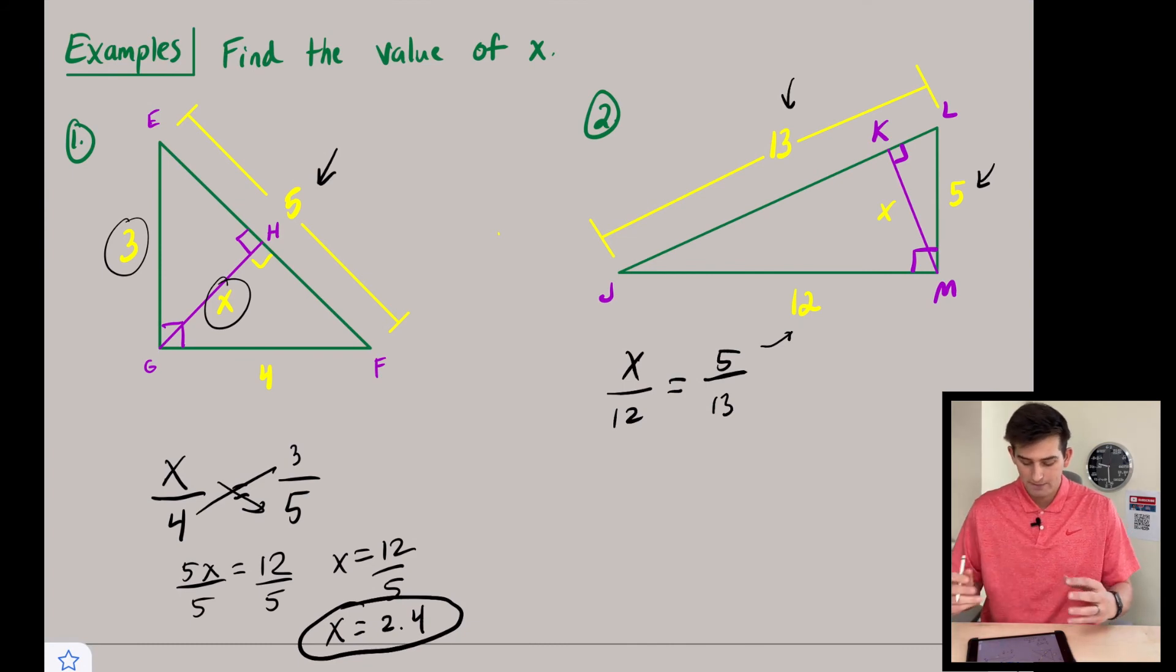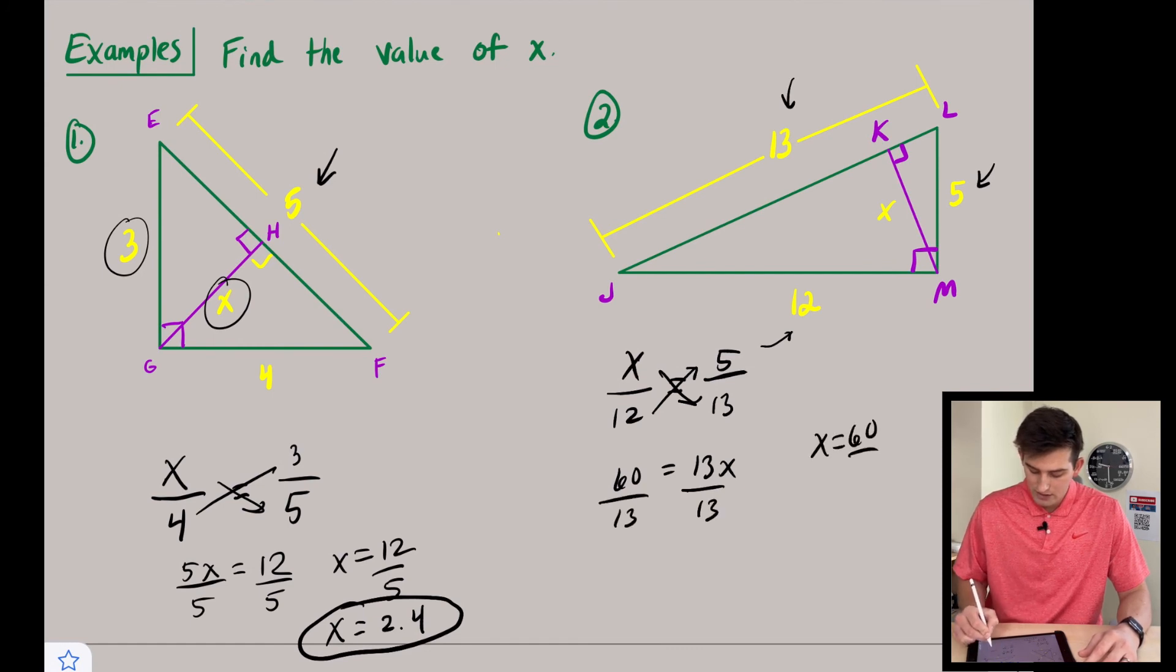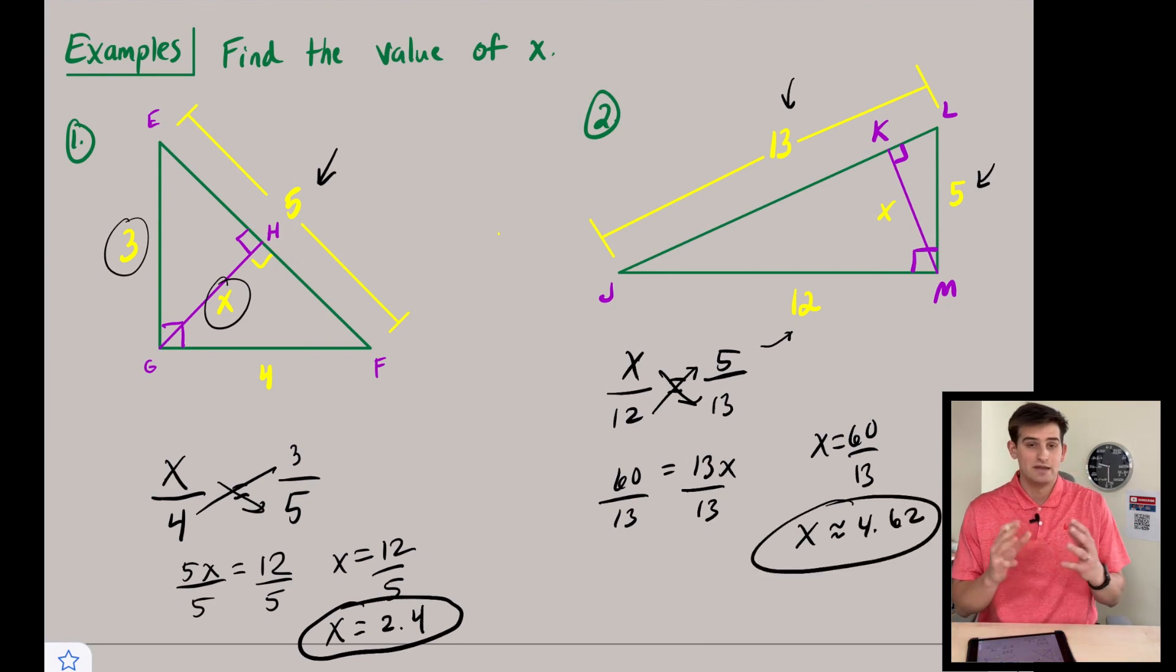And so now what we can do is cross multiply, and we're going to get five times 12, which is 60, and 13 times x, which is just 13x. So now we can divide both sides by 13 and we get x equals 60 over 13. And if we want to type that in our calculator to simplify that as a decimal, we can do 60 divided by 13, and that gives us 4.62. So we'll say approximately 4.62.